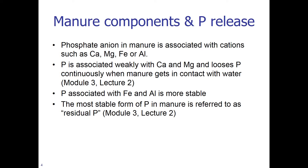When we look at manure components, we need to see how P is associated with the cations. P in manure is associated either in the calcium or magnesium form, or in the iron and aluminum forms. P is associated weakly with calcium and magnesium and is released continuously when manure is in contact with water. P associated with iron and aluminum is more stable, and the most stable form of P in manure is referred to as residual P.